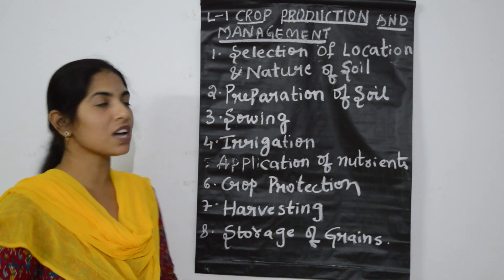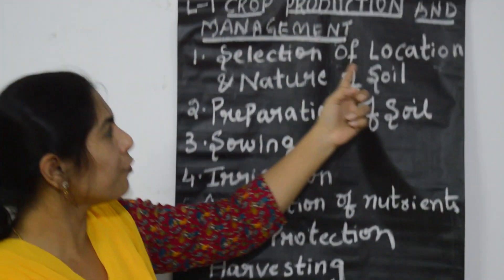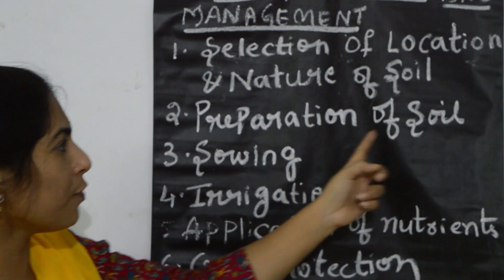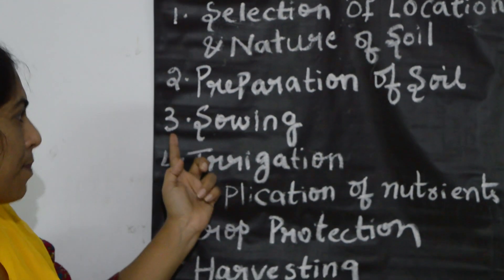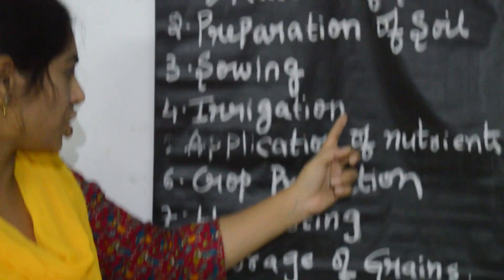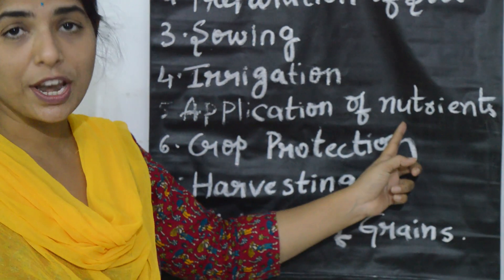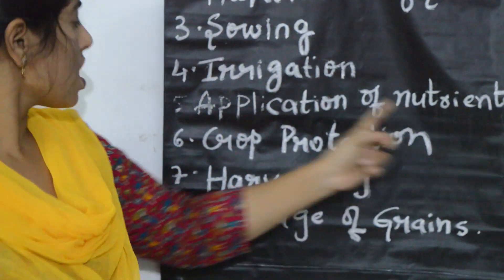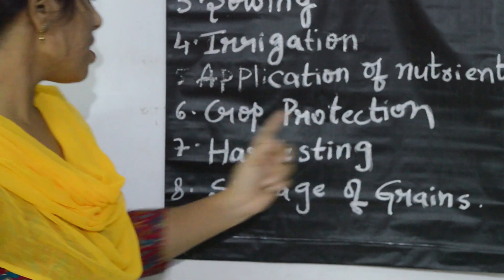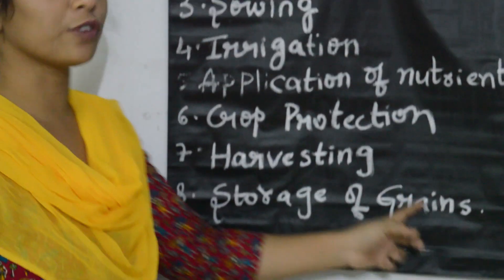Now what are the steps that are involved? The first step is selection of location and nature of the soil. Second step is preparation of the soil. Third step is sowing of the seeds. Fourth step is irrigation. Fifth step is application of nutrients — it may be manure or fertilizers. Sixth step is crop protection. Seventh step is harvesting. And eighth step is storage of grains.